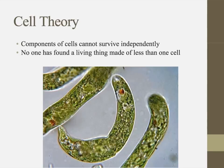Scientists are actually constantly working to disprove this, but as of yet they've been unsuccessful. No one has found a living thing made of less than one cell. They haven't been able to take any of the components of cells and make them live on their own — those components can't survive independently. And that's how we know that cells are the smallest units of life.